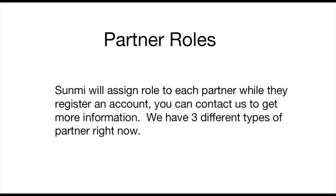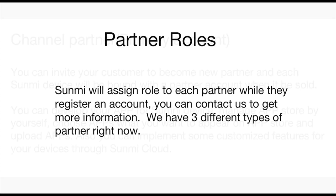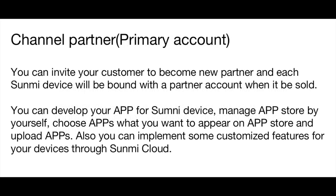We have three different types of partners right now. First, channel partner primary account. You can invite your customer to become a new partner, and each Sami device will be bound with a partner account when it is sold. You can develop your app for Sami devices, manage an app store by yourself, choose apps that you want to appear on the app store, and upload apps. For those apps uploaded to the app store, they do not need to be verified by Sami. Also, you can implement some customized features for your devices through Sami Cloud.